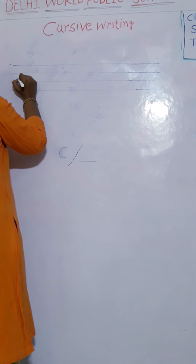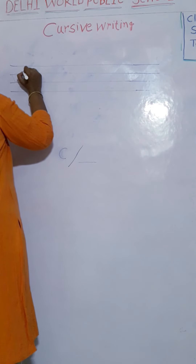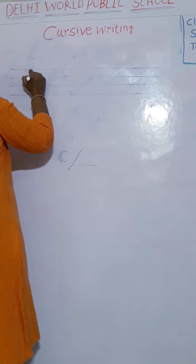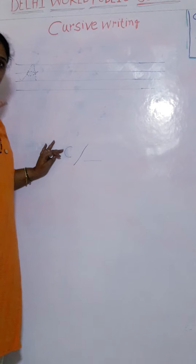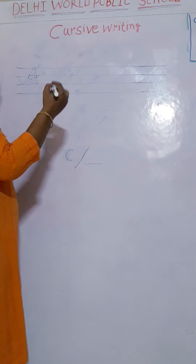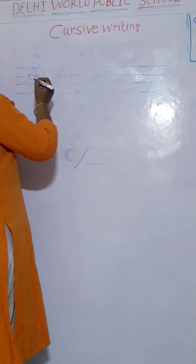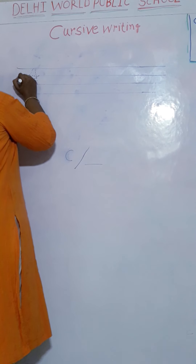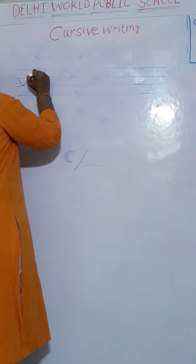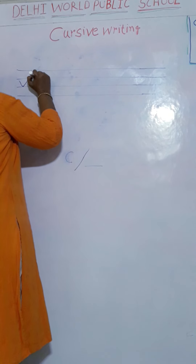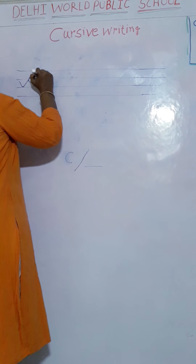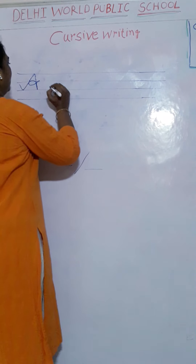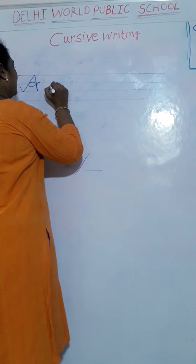First dotted line. See students, you have to hold the pen properly and write in the correct way. Start from this point — up to the mountain, down to the mountain, then again up to the mountain, and make a twist here. Okay? That is the correct 'A'. Make dots here.